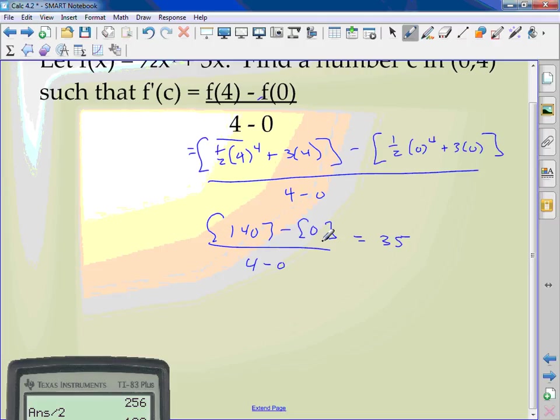So I have to find a number c in (0,4) so we know that f'(c) is 35.